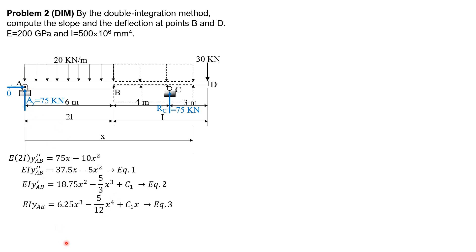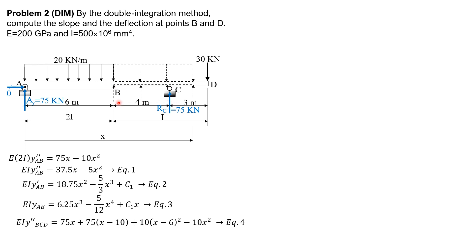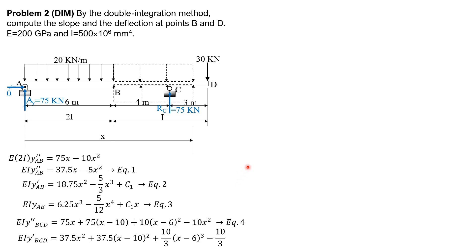For segment BCD, EI Y double prime BCD equals 75X plus 75(X minus 10) plus 10(X minus 6) squared — where 10(X minus 6) squared accounts for 20 times (X minus 10) times (X minus 10)/2 — then minus 10X squared, where minus 10X squared comes from 20 times X times X/2. Integrating gives EI Y prime BCD equals 37.5X squared plus 37.5(X minus 10) squared plus 10/3 (X minus 6) cubed minus 10/3 X cubed plus C sub 3.